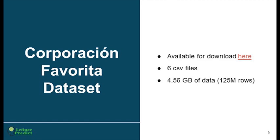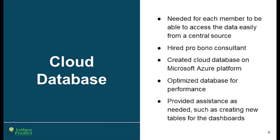The data we used was directly from Corporacion Favorita, and I have a link included where the data can be accessed and downloaded directly. They provided six CSV files totaling 4.56 gigabytes of data with 125 million rows — obviously a very large dataset. So in order to work with it and ensure we were all accessing exactly the same data, we created a cloud database on the Microsoft Azure platform, optimized for performance so that pulling data down was much faster, which helped us with exploratory data analysis as well as the modeling process.